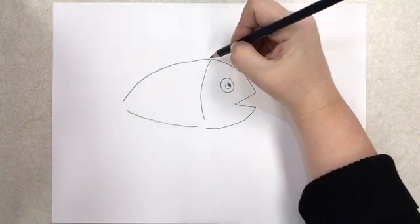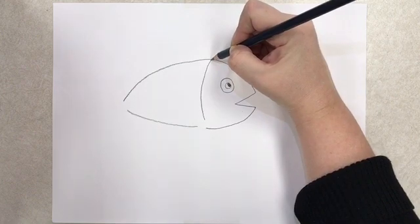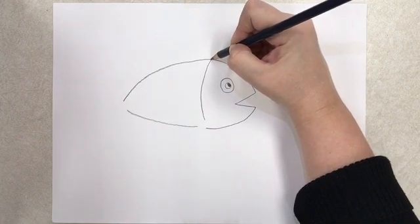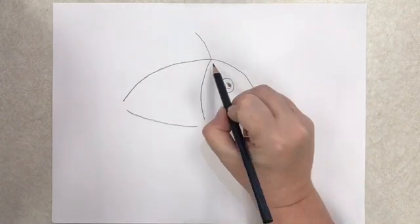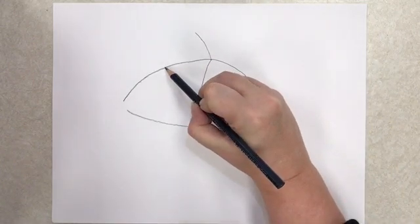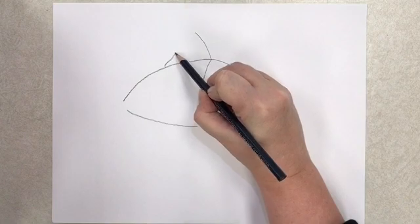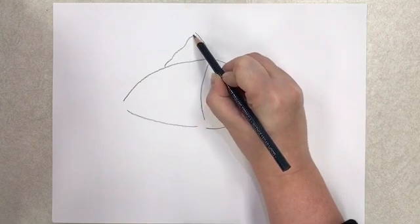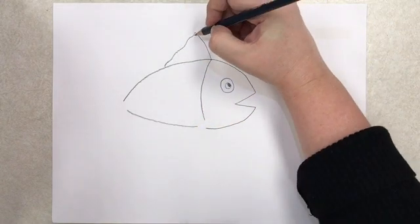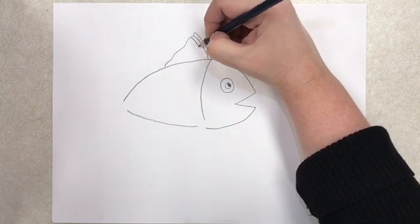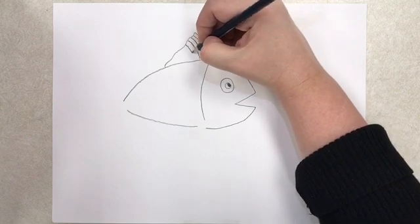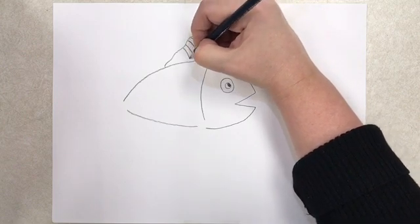Now let's put on the fins. Let's start with the top one. I'm going to start right here where all three lines connect, and I'm going to go up. Then I'm going to decide how long it's going to be, and I'm going to come and make a curved line, and connect it. Now I'm going to put the ridges on the fin. They need to be slightly curved as they come down to the fish's body.